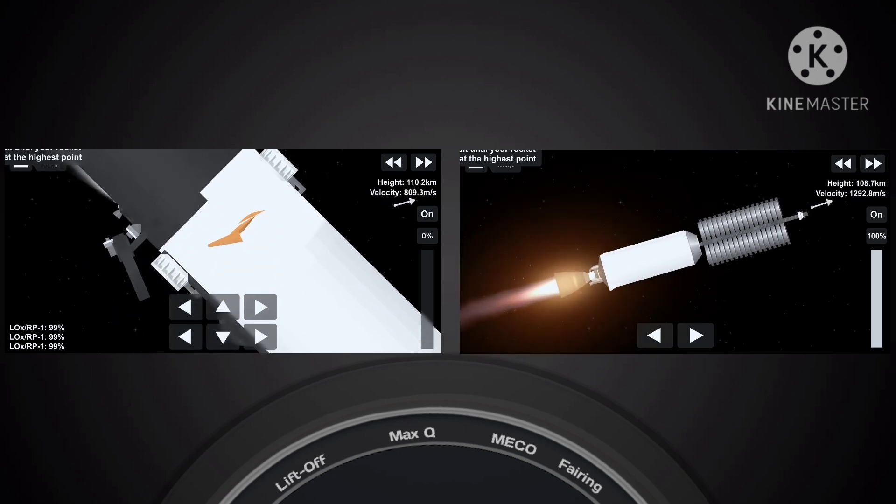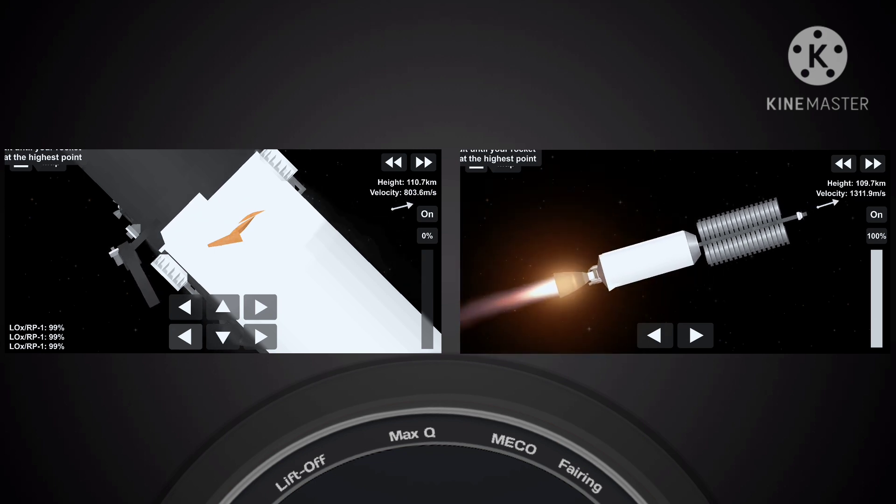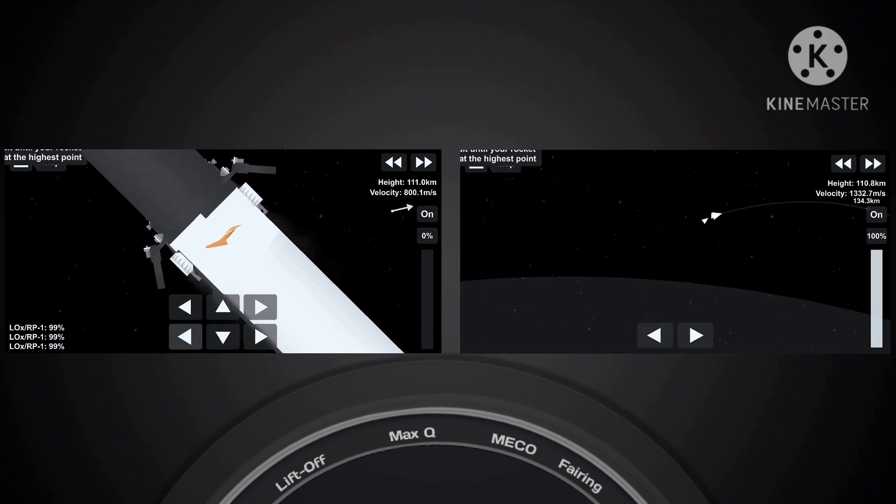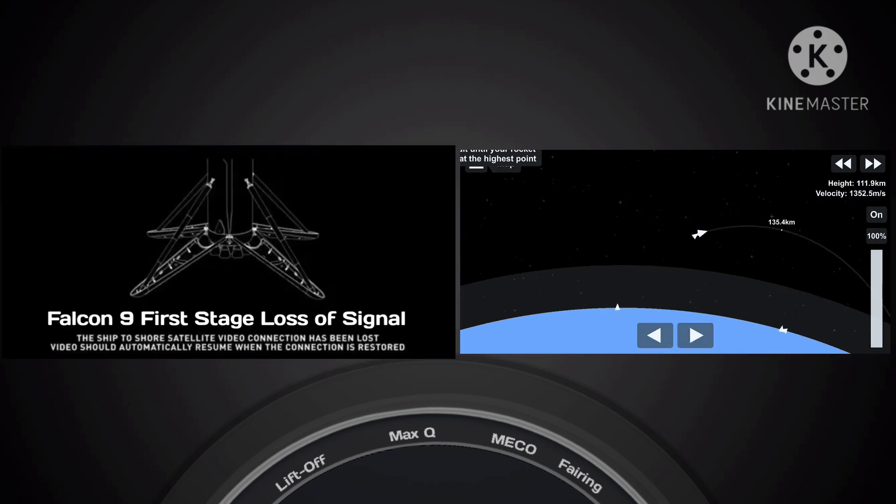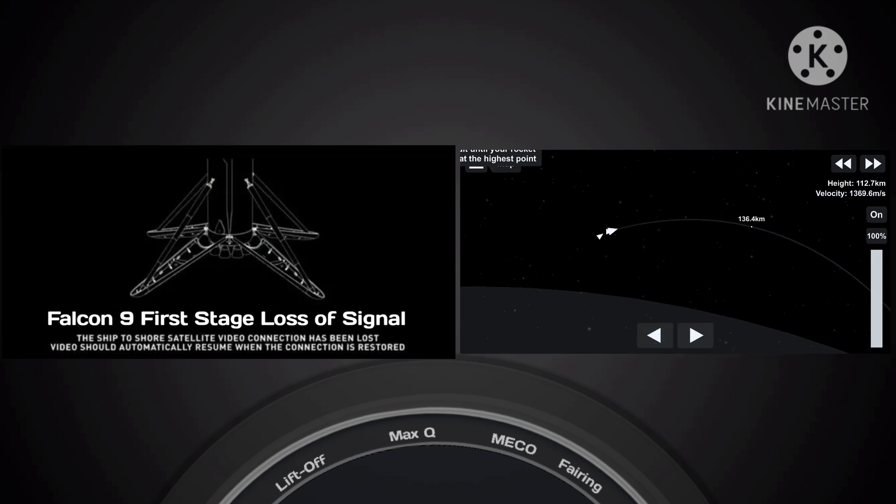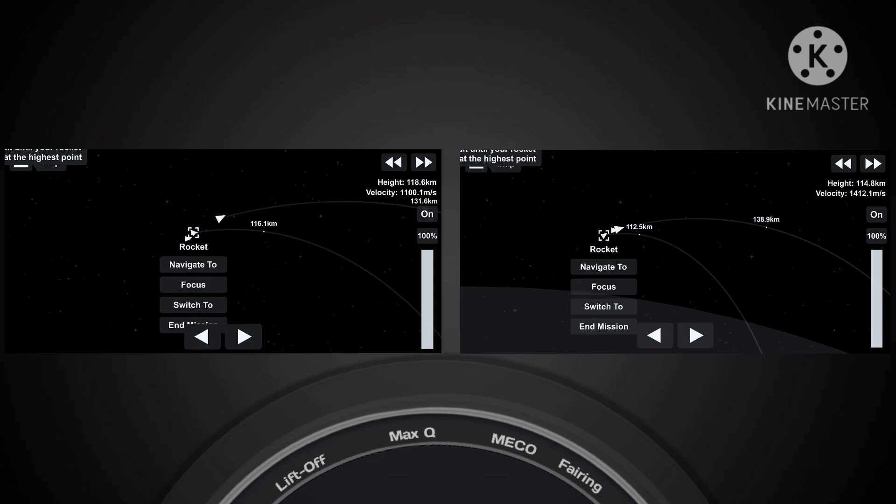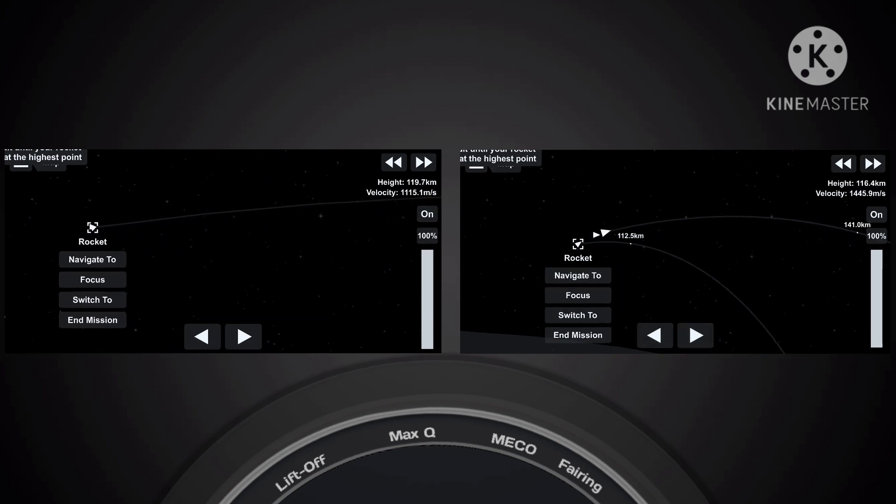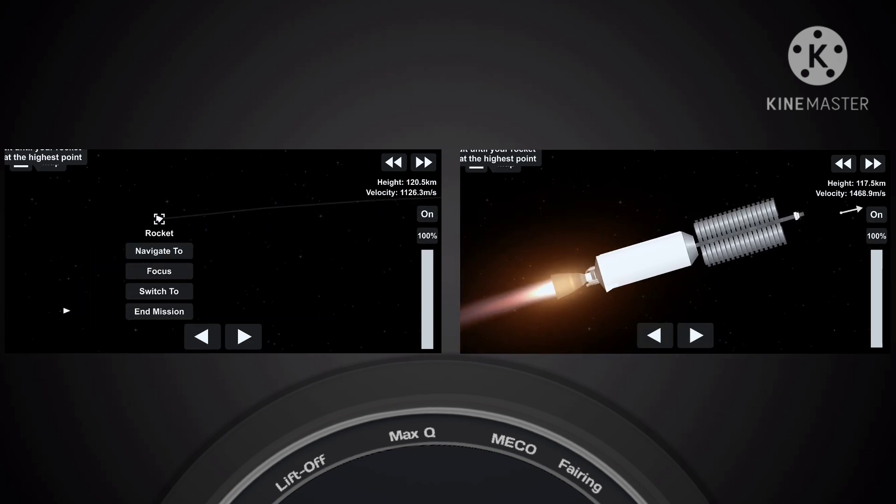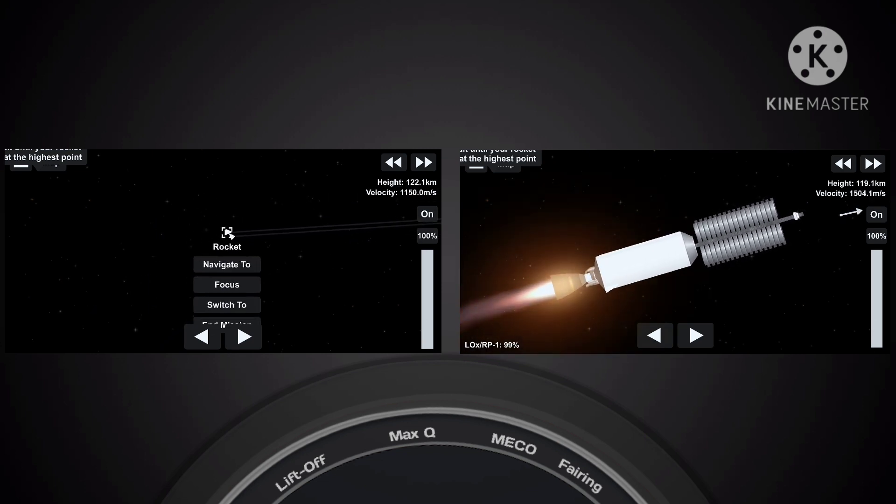As a reminder, we will be attempting to pick up the fairing halves after they touch down on the water with our recovery vessel, Miss Chief, today. Now, with stage two well on its way to orbit, stage one is heading back to Earth and will perform two burns on its way down.